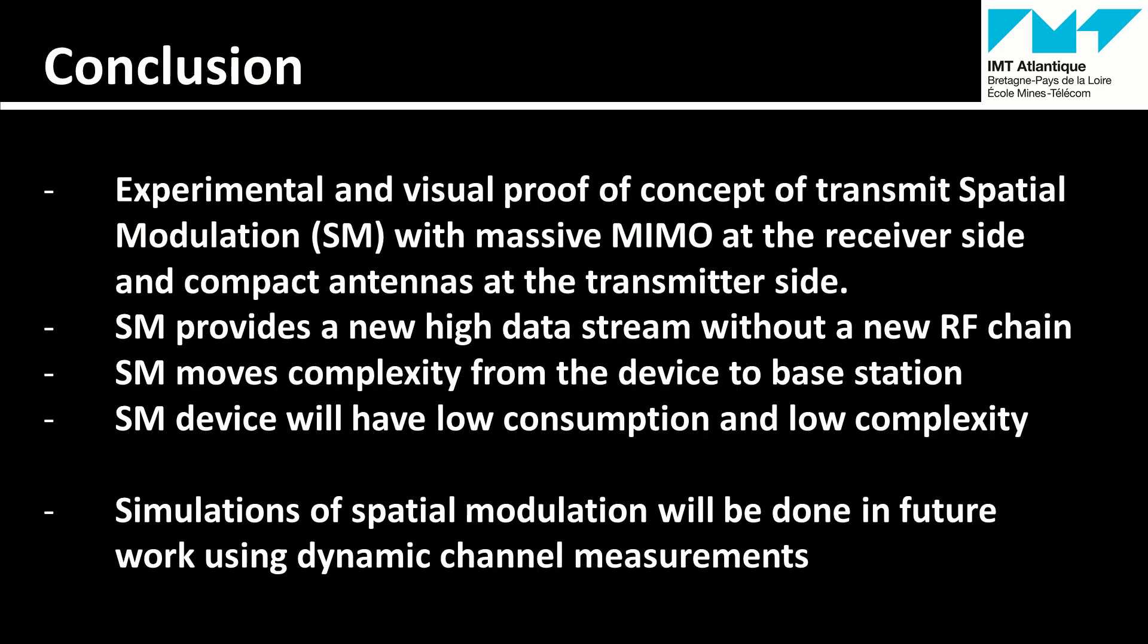This video presented an experimental and visual proof of concept of transmit spatial modulation with massive MIMO antenna at the receiver side and compact antennas at the transmitter side. With just a single RF chain, spatial modulation could provide high data rate with two independent streams. By moving the complexity to the base station, the device could have a low complexity and a low power consumption.